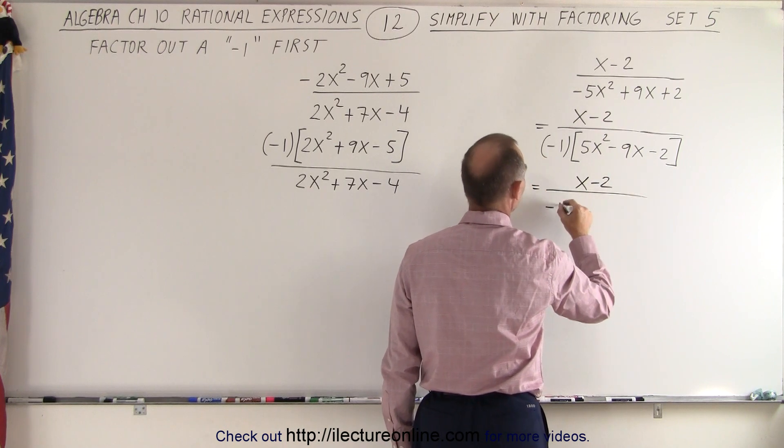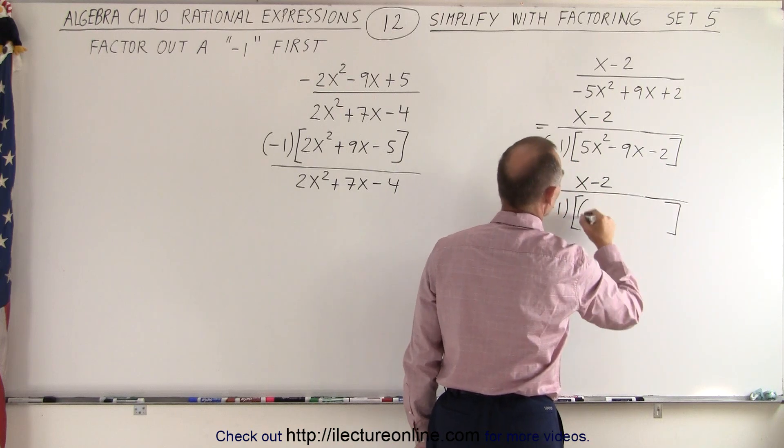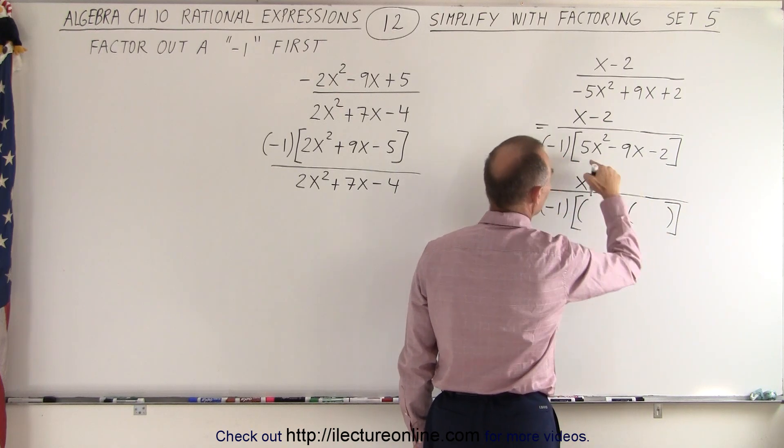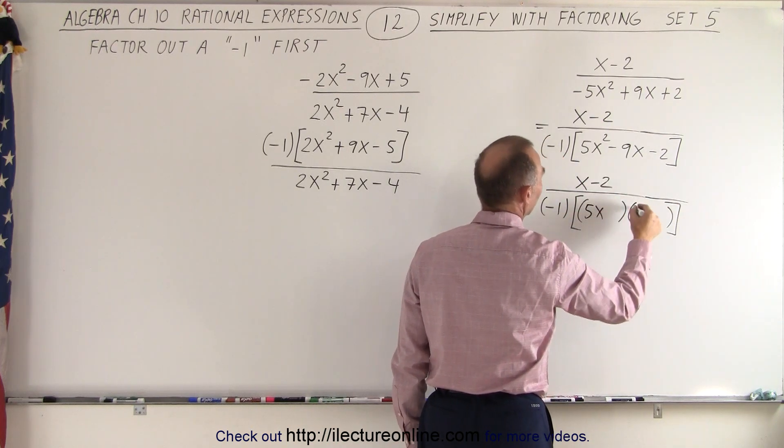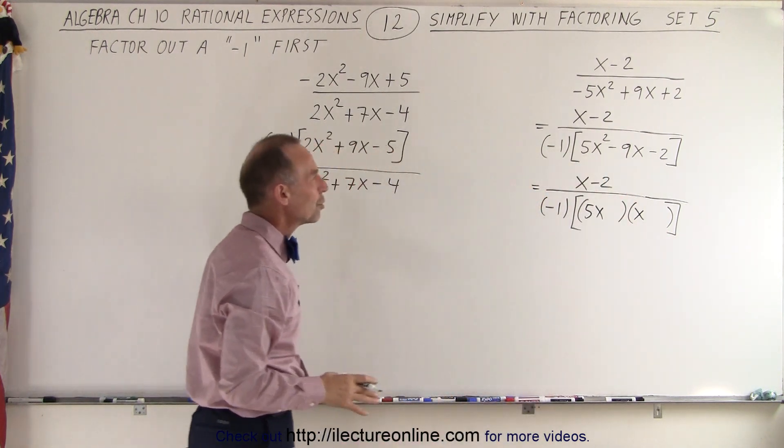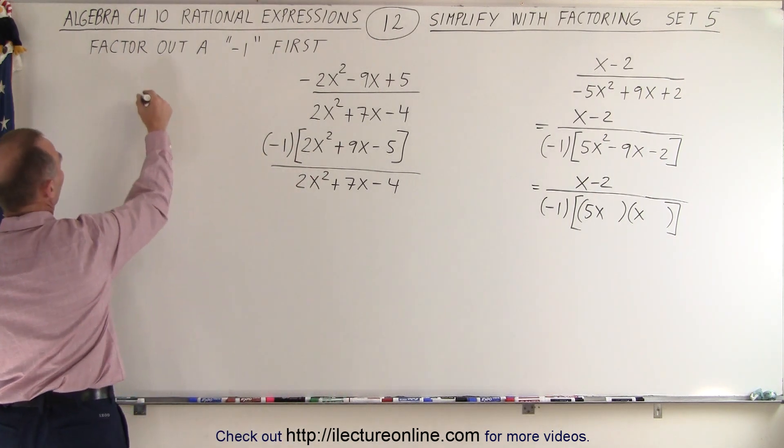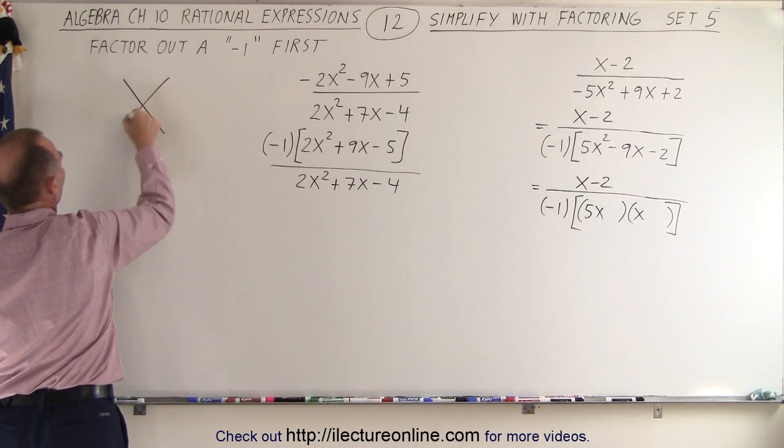In the denominator we have a negative 1 times what we want to factor here. Now we're going to end up with two binomials. Here we need a 5x and an x, but notice since the 5 is kind of a big number, we may want to use the FOIL method. So let's try and see what we get when we use the FOIL method on the one in the denominator.